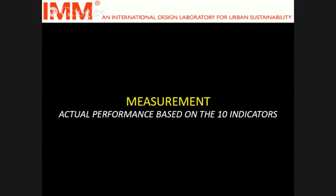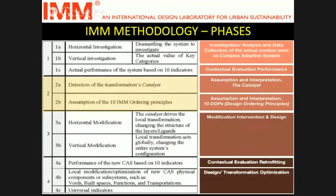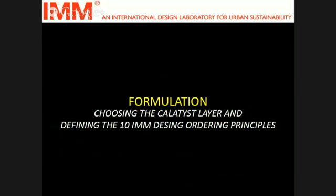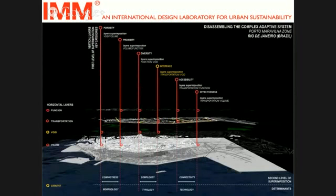Then we go to measurement. All of these indicators are calculated with formulas, and we gathered information and calculated numbers for the sake of comparison with the Transformator project. Then we go to the second phase, which was identifying catalysts. We have horizontal and vertical catalysts, and as I said before, the catalyst is the malfunctioning system, malfunctioning subsystem, or malfunctioning key category.